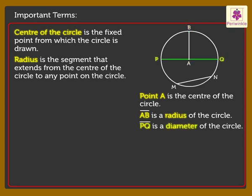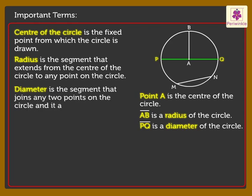Line segment PQ is a diameter of the circle. Diameter is the segment that joins any two points on the circle and it always passes through the center of the circle.